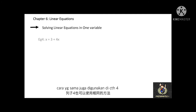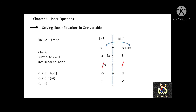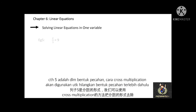A similar method is also applicable to example 4. Take note that negative 3x equal to 3. We can divide both sides by 3 and simplify to negative x equal to 1. And finally, x equal to negative 1.